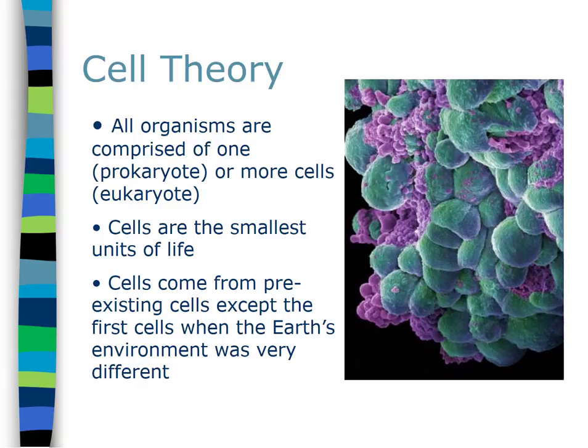Cells are the smallest unit of life — that's number two. We have not yet found anything smaller than a cell that we can consider living. And third, all cells come from pre-existing cells. We're going to talk about abiogenesis — the formation of the first cells from non-living components — a little later in the year.